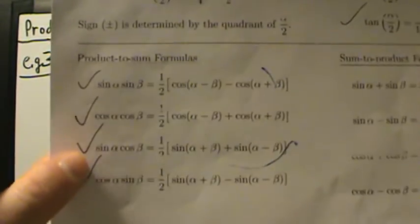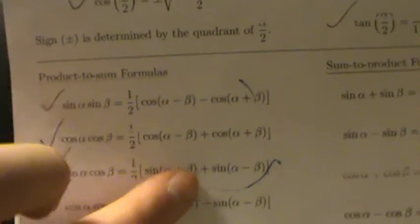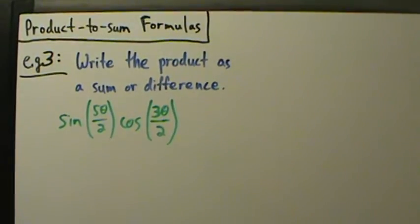For no real particular reason, so sine α cosine β is one-half times the quantity sine (α plus β) plus sine (α minus β). So we're going to use that there.